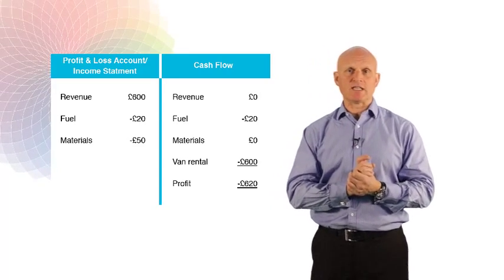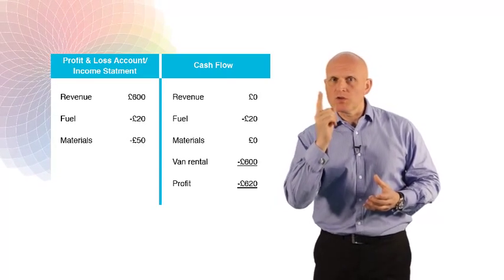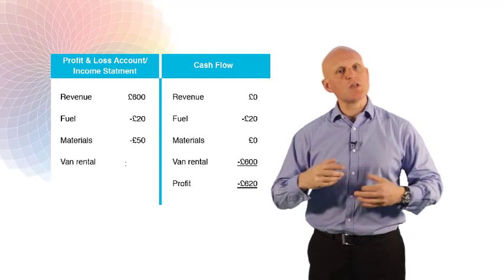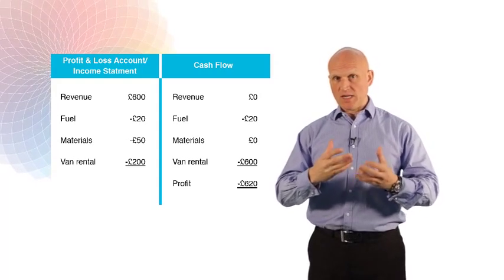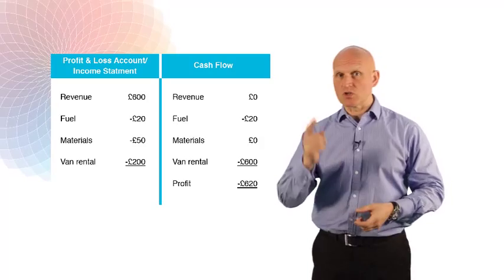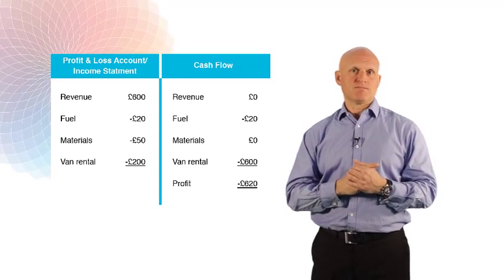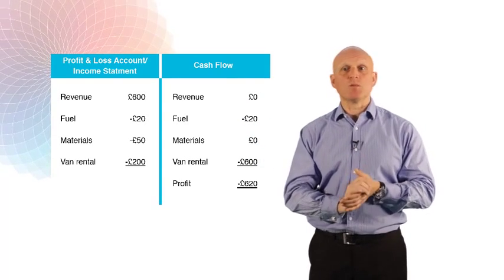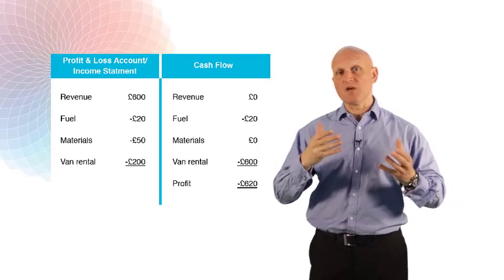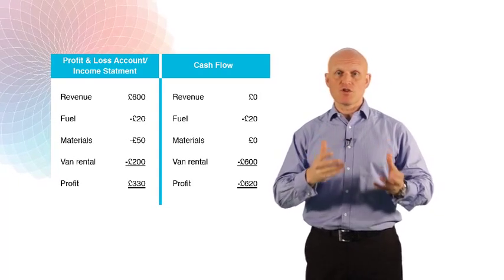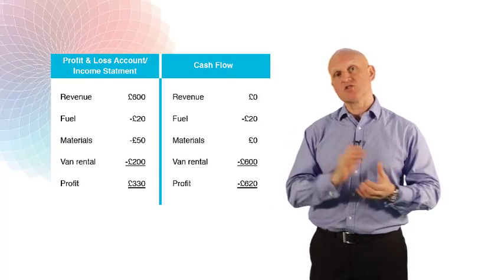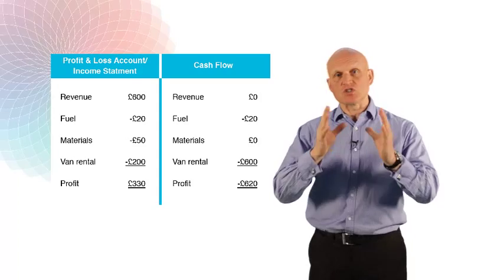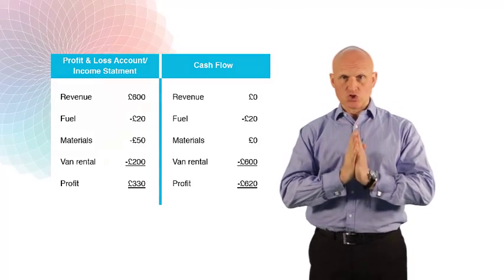And the last thing is the van rental. Now we paid £600 for the van rental, but we only used one month's worth of that van rental period. So we only put in one third, because we paid £600 for three months, but we only used it for January. So we only put one third, the bit that relates to January, in there. And so now, if we look at it from a profit and loss account viewpoint, you can see things look much rosier. We've actually made a profit from trading of £330 in the month, if we add it up. You can see that down at the bottom. And it's this picture, this profit and loss account picture, that the accountant views as the true performance of the business during the month.